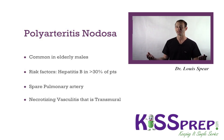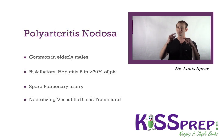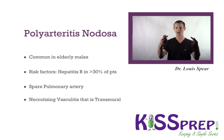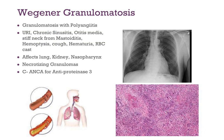Polyarteritis Nodosa is common in elderly males and associated with high risk of Hepatitis B. Interestingly, it spares the pulmonary artery. Under the microscope you see necrotizing vasculitis that is transmural — unlike the segmental pattern of Buerger's. Key facts: Polyarteritis Nodosa, risk factor is Hepatitis B, spares the pulmonary artery, vasculitis is transmural.